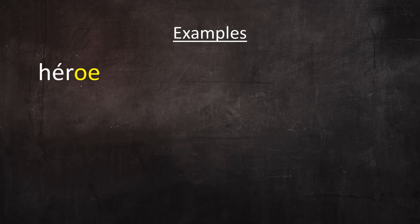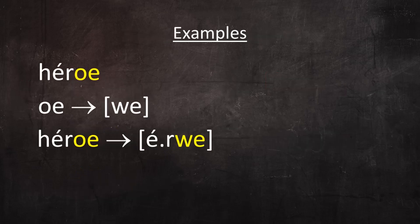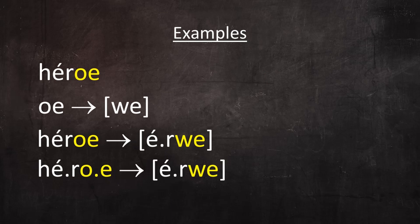The word héroe contains the hiatus O-E, which could resolve to WE. Based on all the external factors, certain speakers under certain circumstances may resolve héroe to héroe. And as always, the resolved version is one syllable shorter. Héroe → héroe.